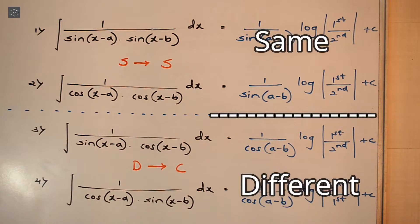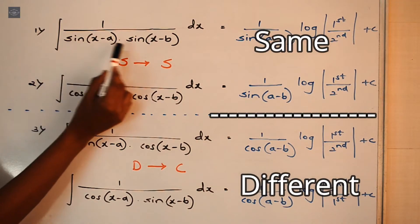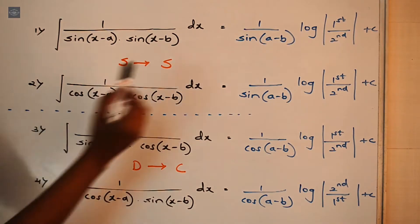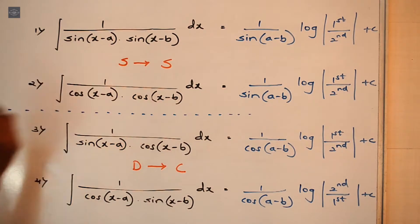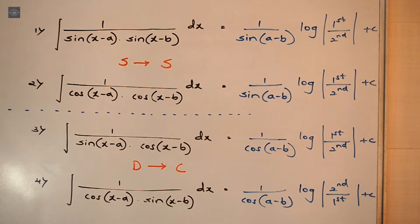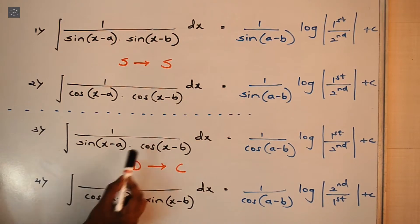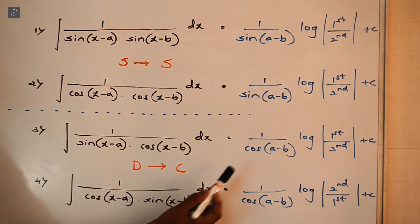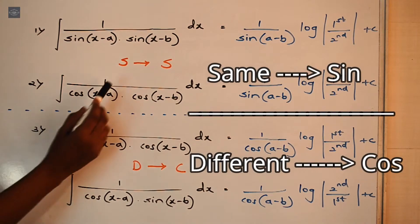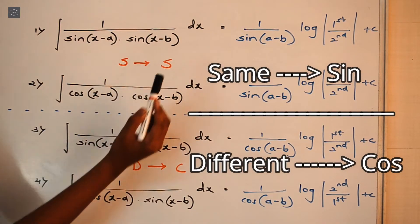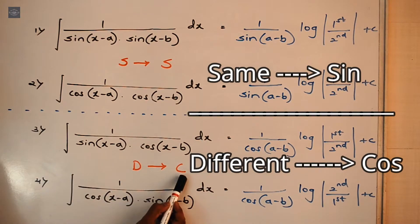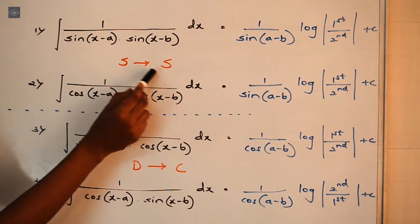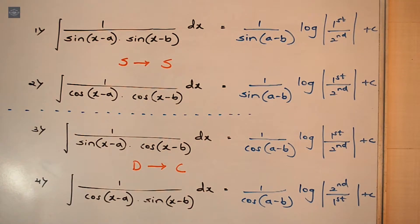Now the cheat code says: whenever we have got same terms in the denominator — sin·sin or cos·cos — always divide by the sin term, sin(A − B). And whenever we are dealing with different terms in the denominator — sin·cos or cos·sin — always divide by the cos term, cos(A − B). So you can remember it as SS and DC: SS means same terms, use the sin term; DC means different terms, use the cos term.